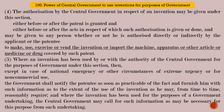Section 100, Subsection 4: The authorization by the central government in respect of any invention, either before or after grant, may be given to any person whether or not authorized directly or indirectly by the applicant or patentee, to make, use, exercise or vend the invention, or import any machine, apparatus, article, medicine or drug covered by the patent. So, the central government can make authorization to a person who may or may not be authorized directly or indirectly by the applicant or patentee.